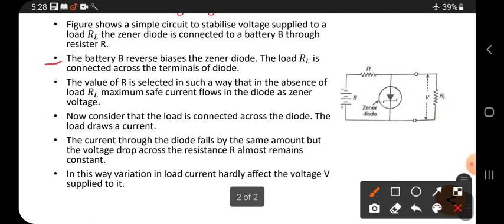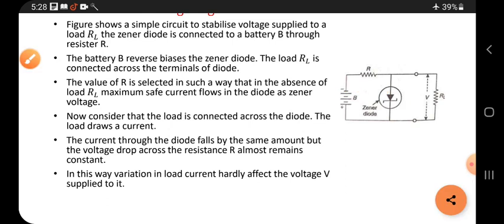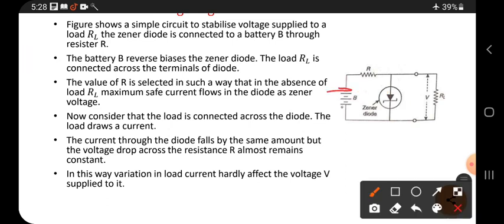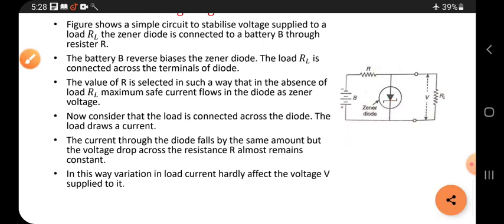The battery B reverse biases the Zener diode. It is connected in reverse bias because it is connected to the negative terminal. Already I said in the Zener diode, it is a P side and this is N side. P side is connected to negative, N side is connected to positive. So that is, it is reverse biased.